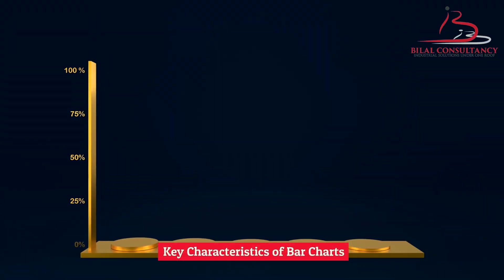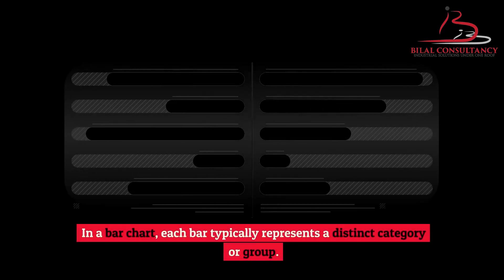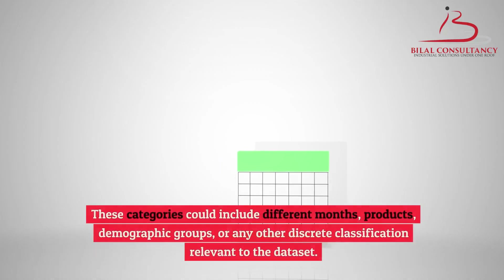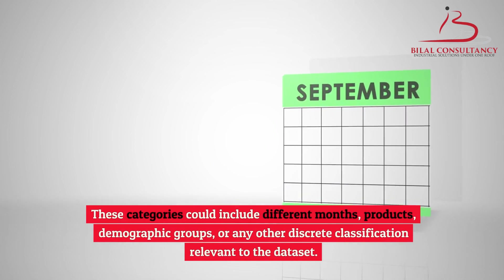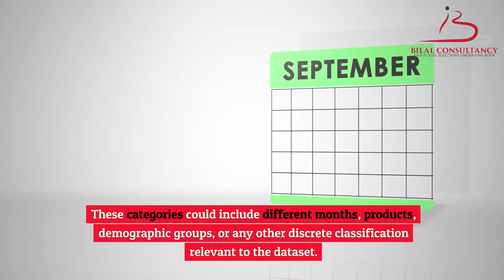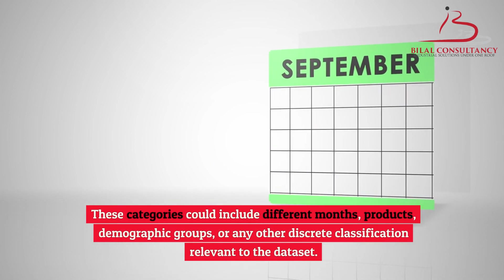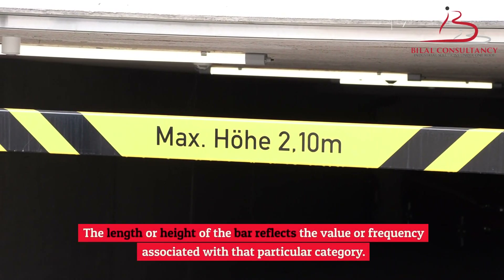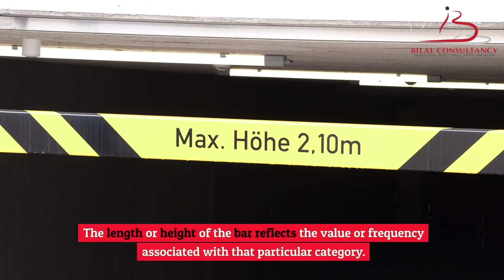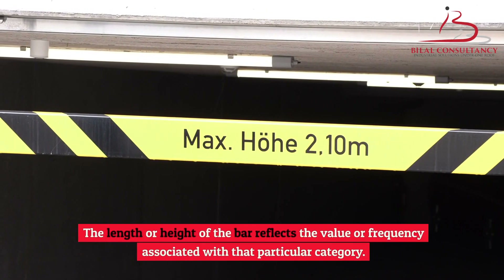Key characteristics of bar charts. In a bar chart, each bar typically represents a distinct category or group. These categories could include different months, products, demographic groups, or any other discrete classification relevant to the dataset. The length or height of the bar reflects the value or frequency associated with that particular category.